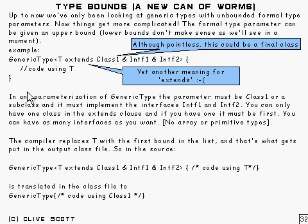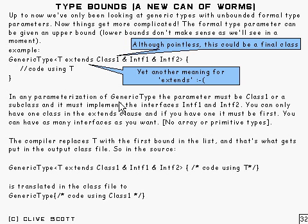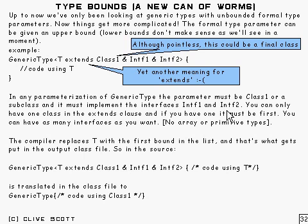The effect of this is that any parameterization of that generic type — the parameter that you use in the parameterization must be class 1 or a subclass of class 1, and also it must implement all of the interfaces — that's interface 1 and interface 2.